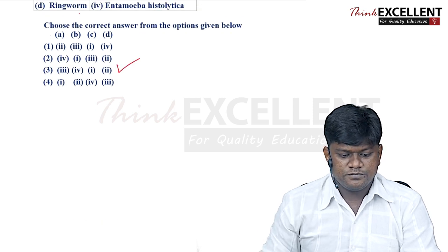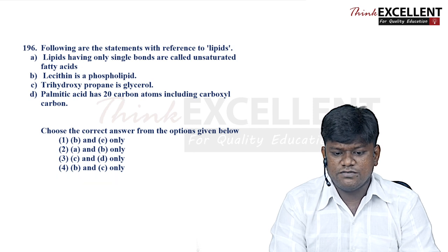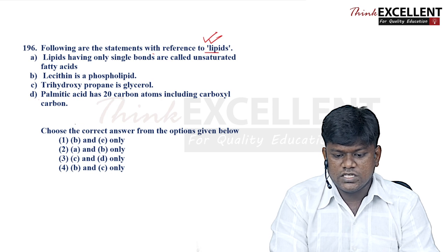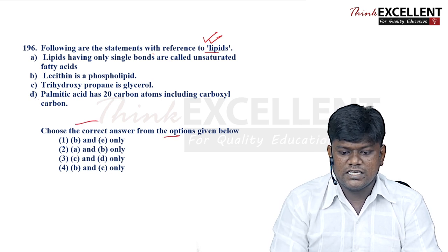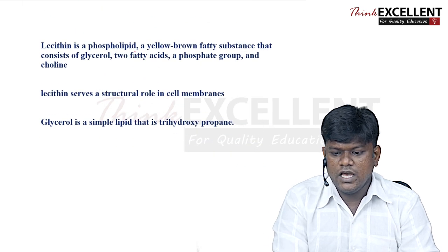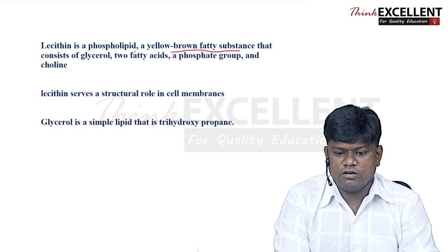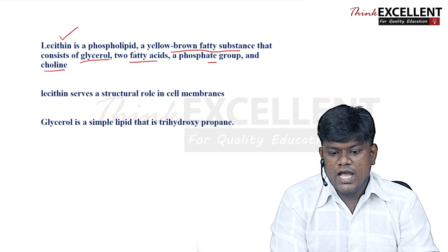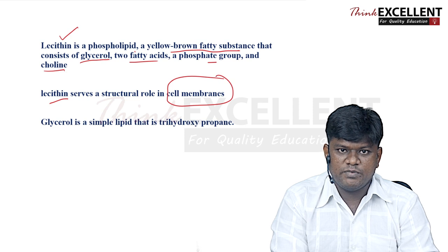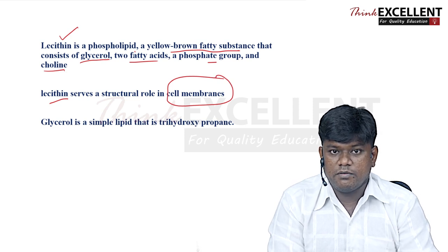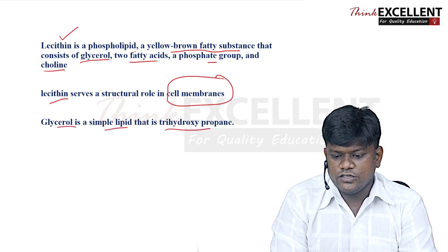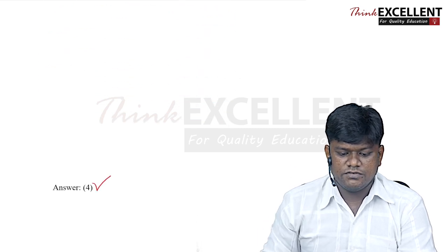Question 196: statements about lipids — choose the correct answer. Lecithin is a phospholipid consisting of glycerol, two fatty acids, a phosphate group, and choline — it also serves as a component of the cell/plasma membrane. Glycerol is a simple lipid — trihydroxypropane. Option 4 is the right answer.